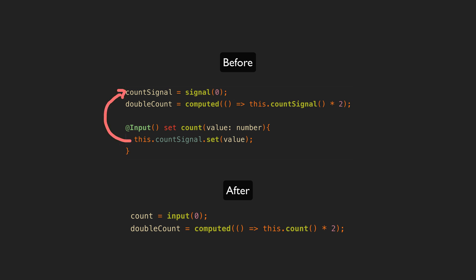Signal inputs solve this problem entirely. We no longer need the workaround — the input is just already a signal to begin with and we can derive values from it directly. There are other benefits of signal inputs too, and I'll link to a couple of articles in the description that explore the signal input API in more detail. But at least for me this is the big deal: being able to react to input changes easily and declaratively.